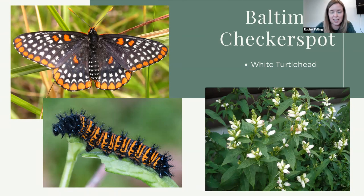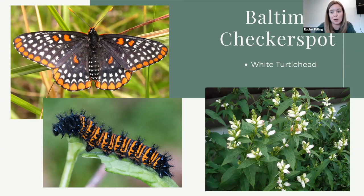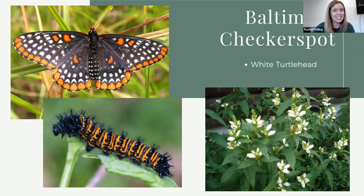The Baltimore checkerspot's host plant primarily is the white turtlehead. Their preferred host plant — the white turtlehead — grows natively in wetland areas. Over the decades, as wetlands have been drained and removed, they have lost habitat. The Baltimore checkerspot is incredibly rare, but worth trying to bring back. If you can find white turtleheads and plant them, especially if you've got a wet area, that's a great solution. Planting plants that can help soak up water and manage it naturally is a great solution to that problem.